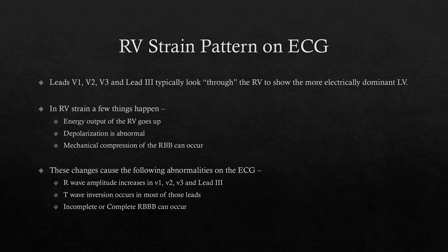What are we looking for? V1, V2, V3, and lead III typically look through the RV to show the more electrically dominant LV. An ECG can only show you net electrical change. Since the LV dominates the ECG of an adult patient, we often don't see what the RV is doing — everything the RV is doing acts in the opposite direction electrically, but the LV is so much bigger that it washes out the RV signal. When RV energy output goes up, you start to see that in the leads closest to the RV: V1, V2, V3, and lead III.